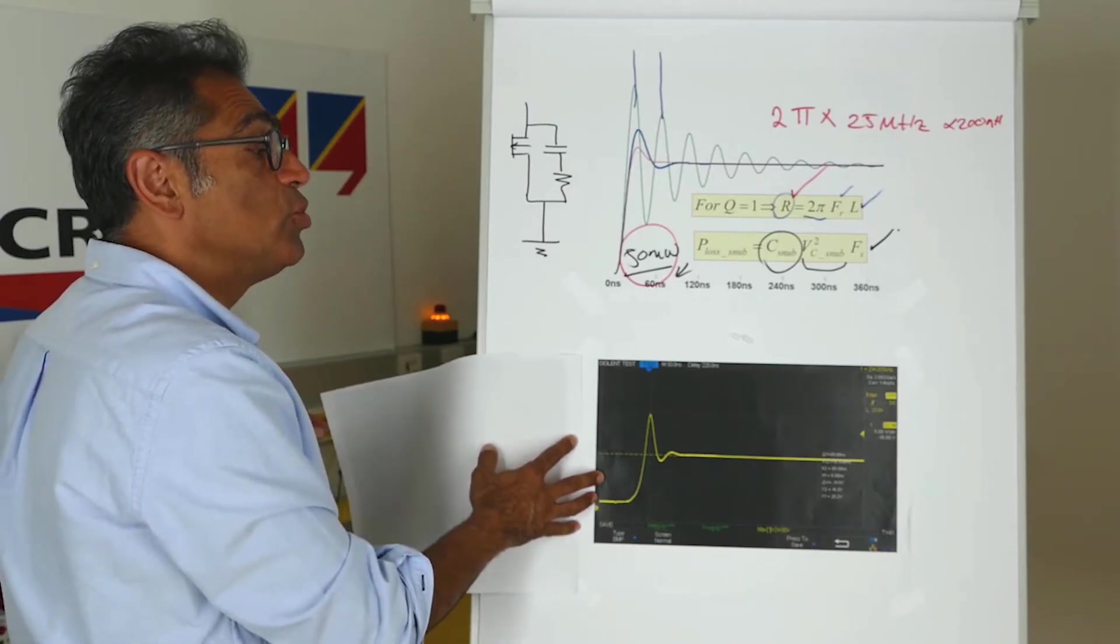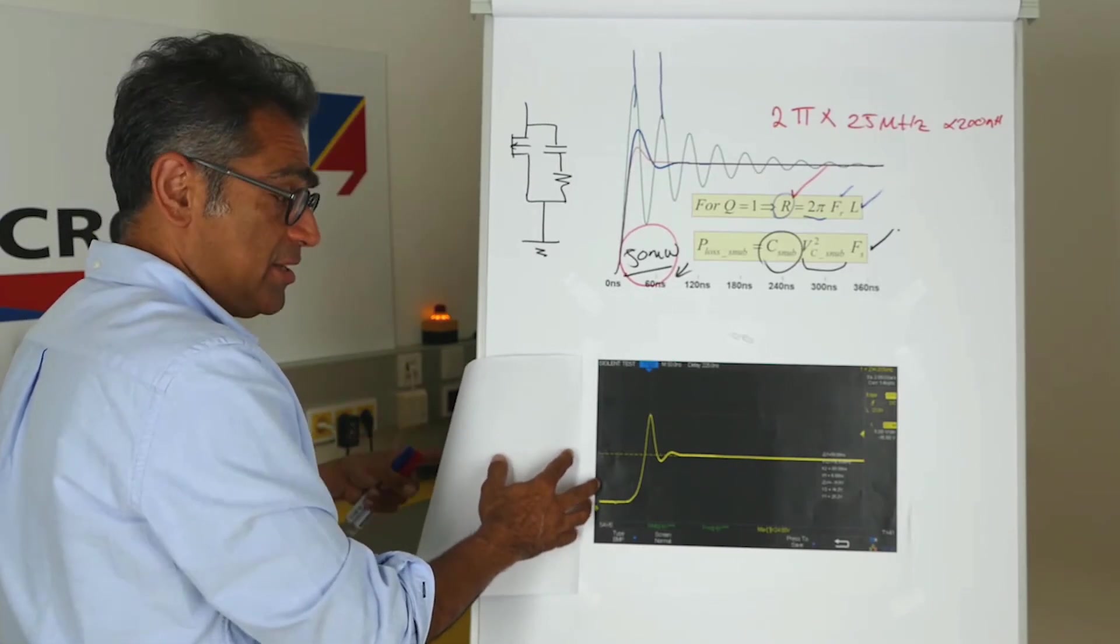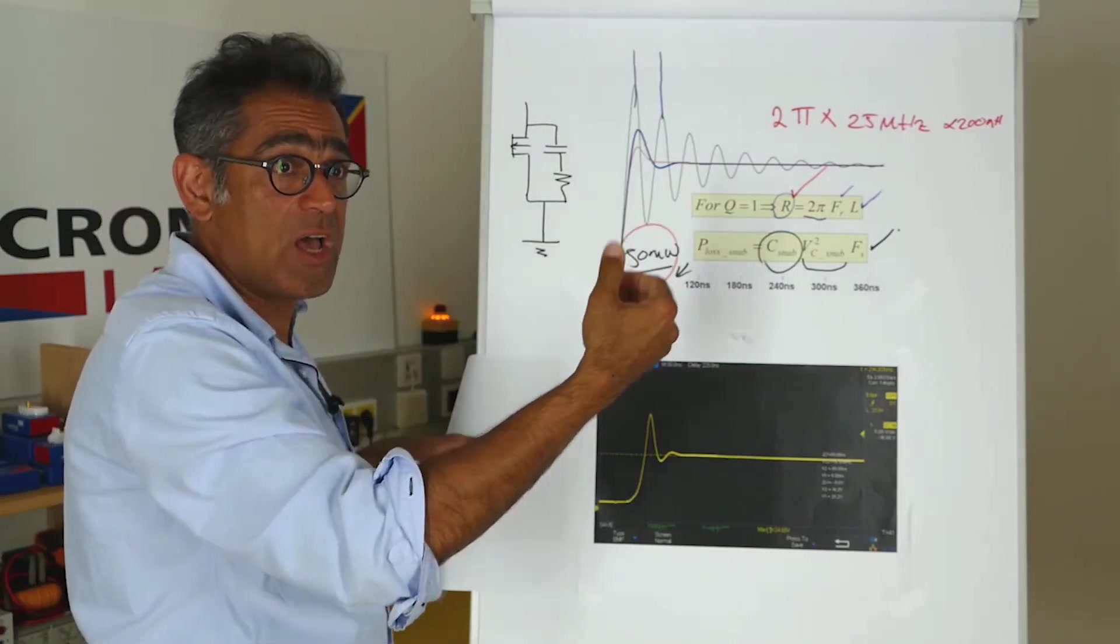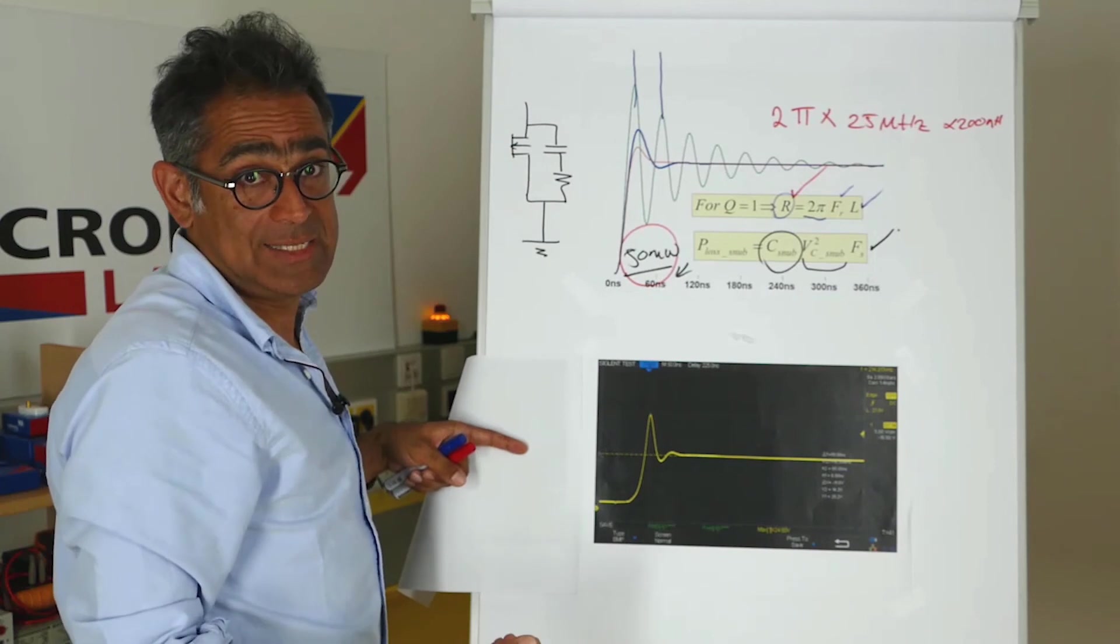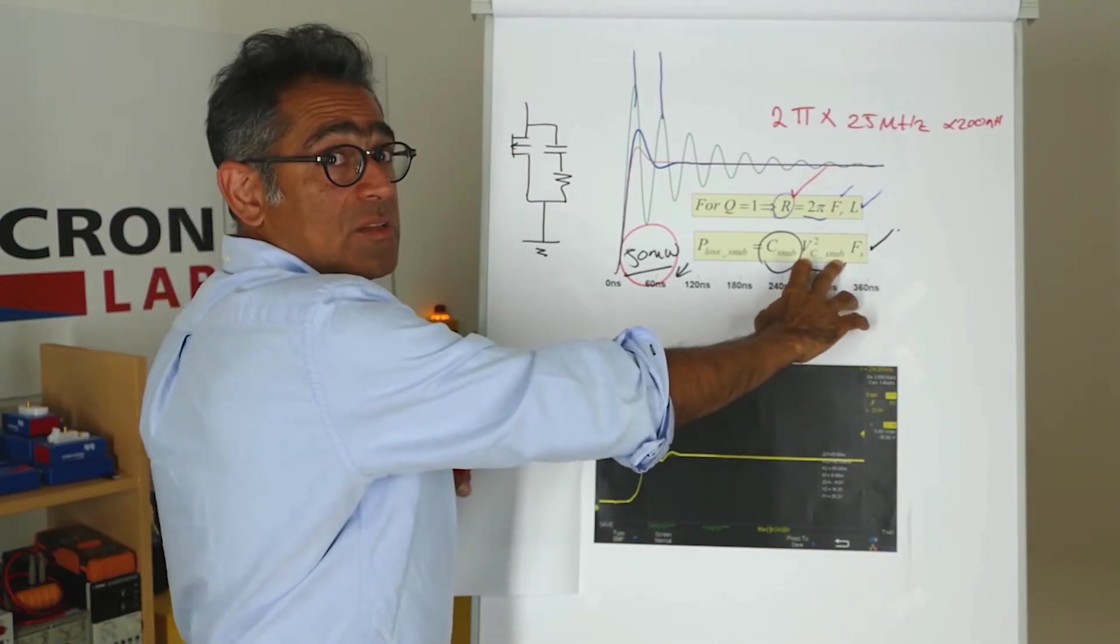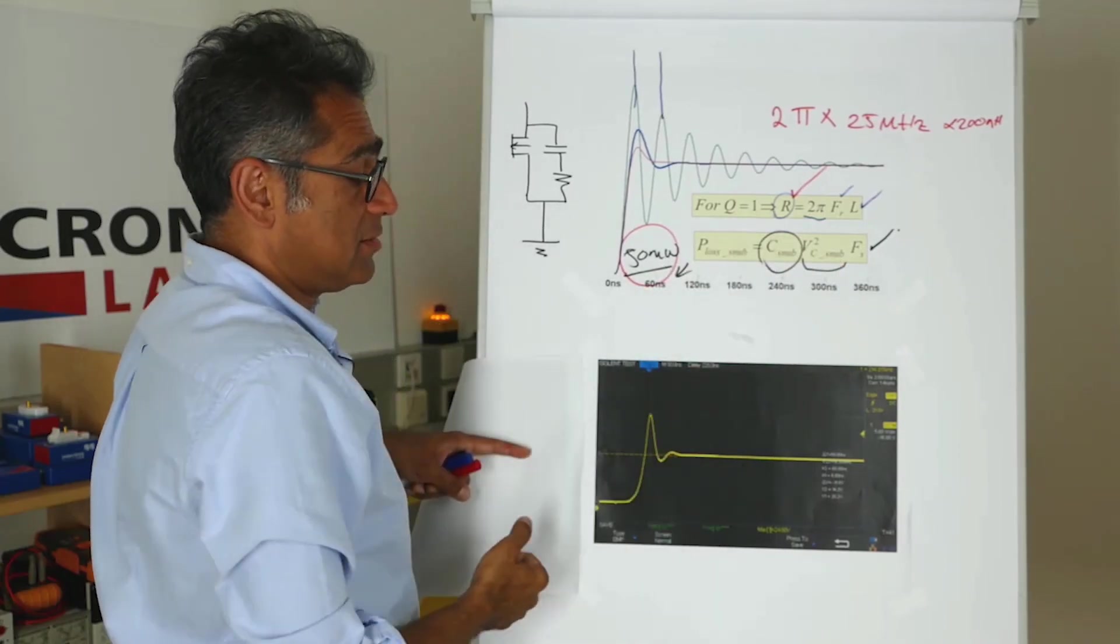If you're going to do a snubber for the secondary side, i.e. the diode on the secondary side of the transformer, the equations actually stay exactly the same. The only thing is that you have to work out the voltage across the diode. Apart from that, everything else stays the same.